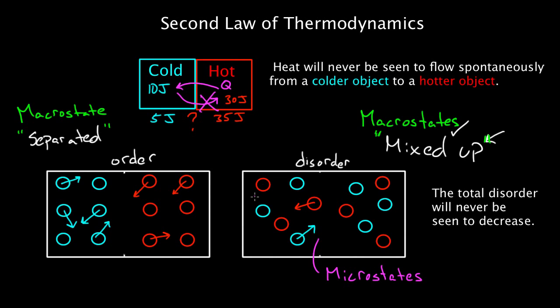The microstate is an exact description. This red one's right here, going a particular speed. This blue one's right here, going a particular speed. If you specify the exact location, blue right here, blue right there going that fast, red right here, what you're describing to me is a microstate.